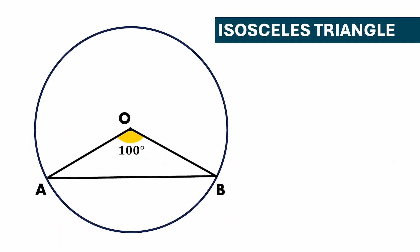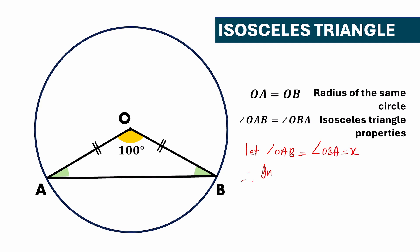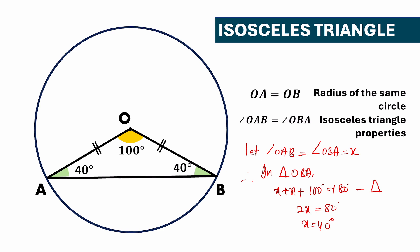Also, pay attention to isosceles triangles. In this case we need to find angle OAB and angle OBA. If we look at the diagram, OA equals OB because they are radii of the same circle. So angle OAB equals angle OBA by the isosceles triangle property. Let angle OAB equal angle OBA equal to X. In triangle OBA: X plus X plus 100 equals 180 degrees, so 2X equals 80, giving X equals 40. Therefore angle OAB equals angle OBA equals 40 degrees.